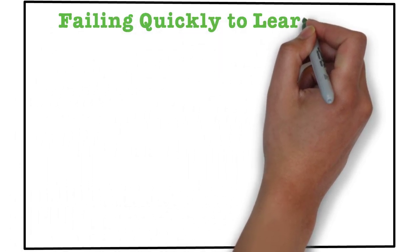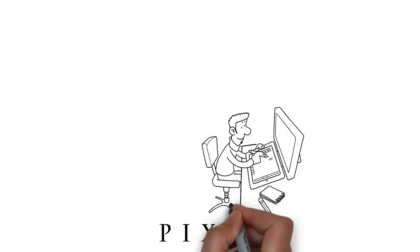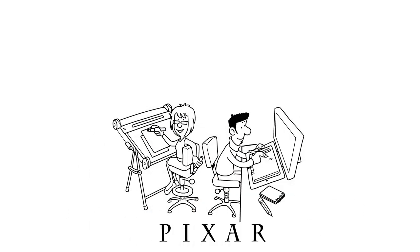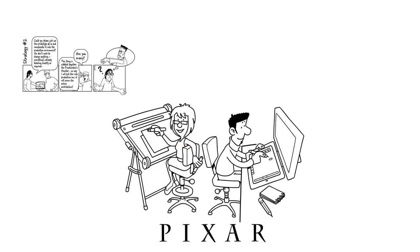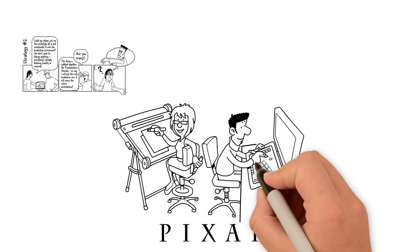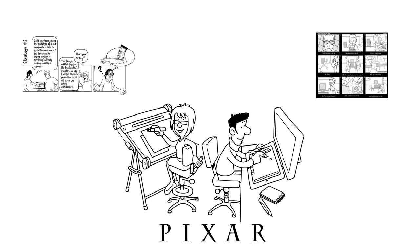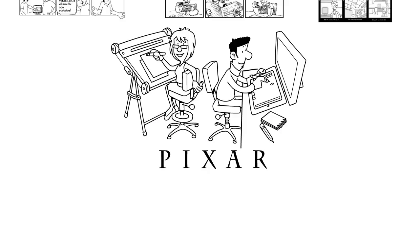Let's talk about Pixar, the great animation studios. The way Pixar works is that they use a lot of prototypes. Their storyboards are their prototypes. That's how they quickly figure out, sketch out a part of a story, and then try to see if that works in the big scheme of things.